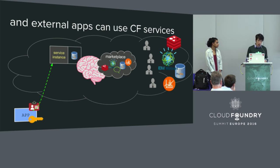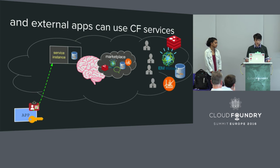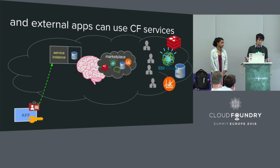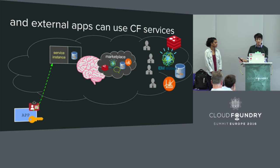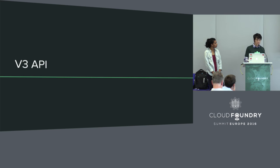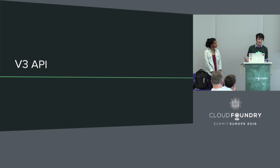So far in this talk, we've been talking about all the work Cloud Controller has been doing under the cover to allow these major operations. The CAPI team is actually hard at work providing some new features. One of these new features is the V3 API. The V3 API is the result of a major overhaul and lots of refactoring of the entire Cloud Controller, and that's how we got here today. We had to do all of that in order to implement some of the V3 features we want.